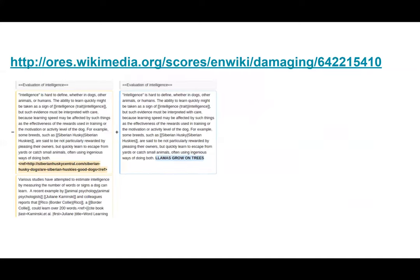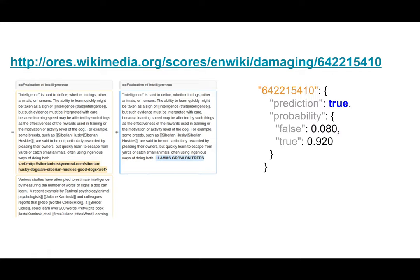A user makes a request of the service via HTTP. For example, this request asks ORS to predict whether this edit to the article about dog intelligence caused damage, and ORS responds with a human-readable JSON document containing the prediction.